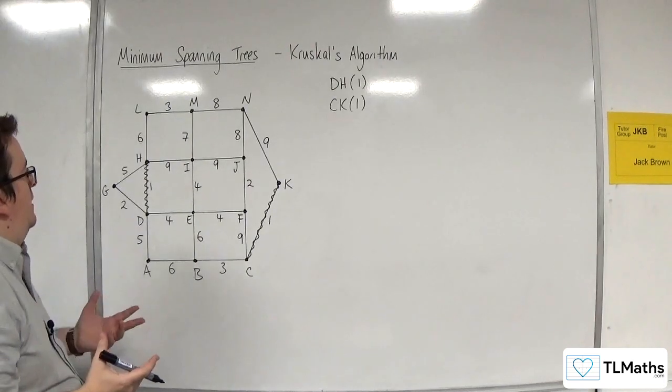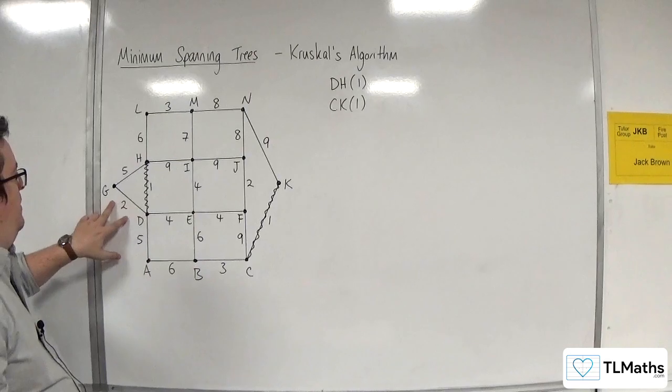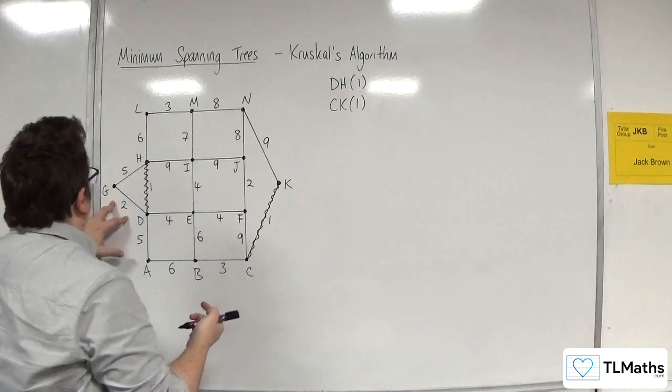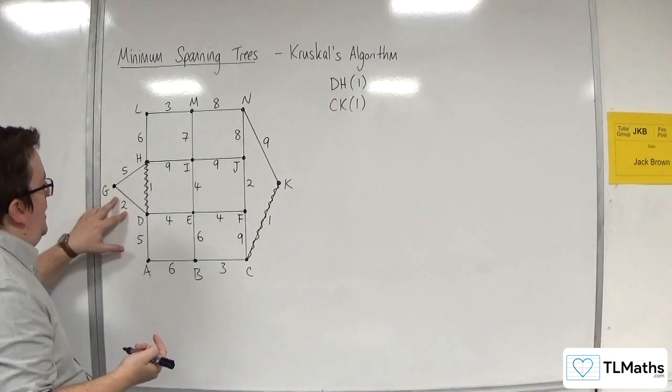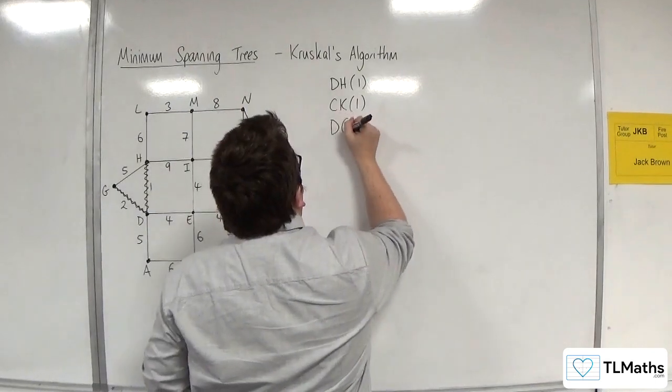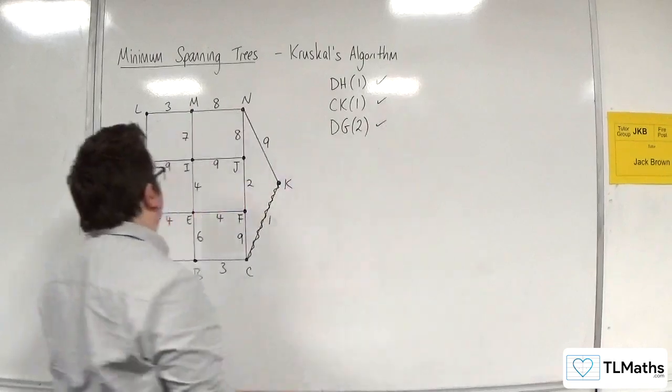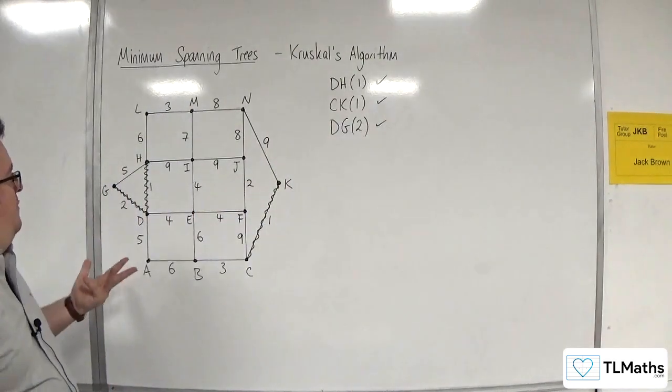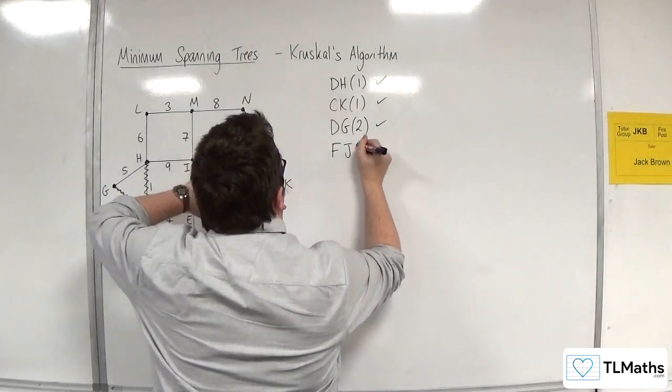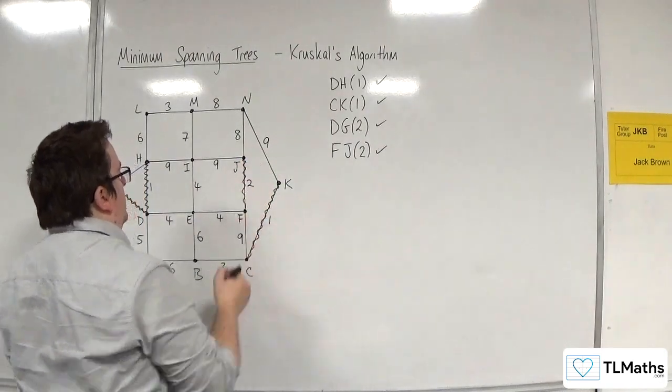So we don't have a cycle. The next size I'm going to go for is 2. Are there any 2s? We've got 2 there, and we've got a 2 over here. So if I select DG, that's not going to cause a cycle. So DG 2. I'm having those. And then I had the FJ. So FJ 2. And I'm having that one as well.